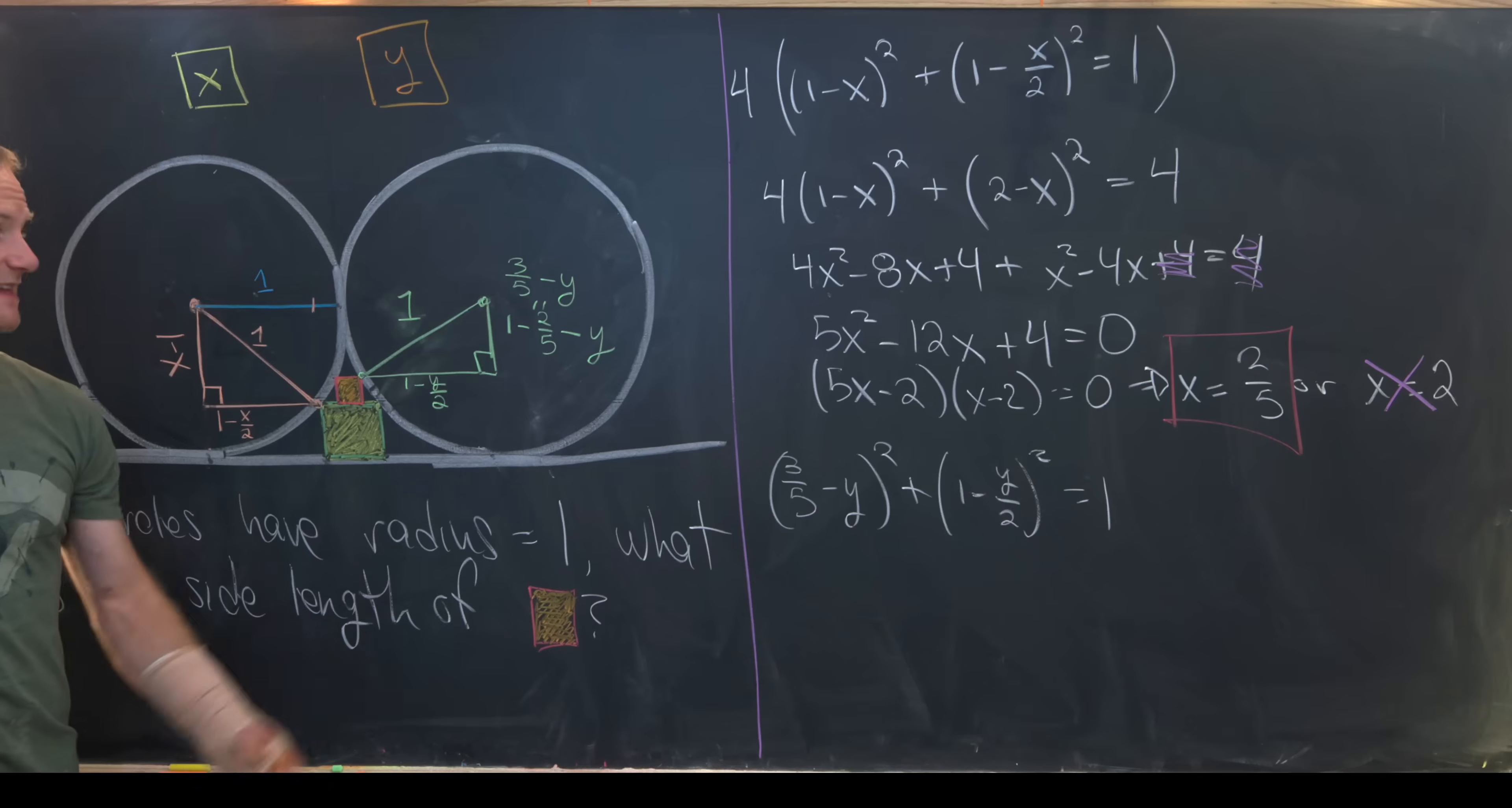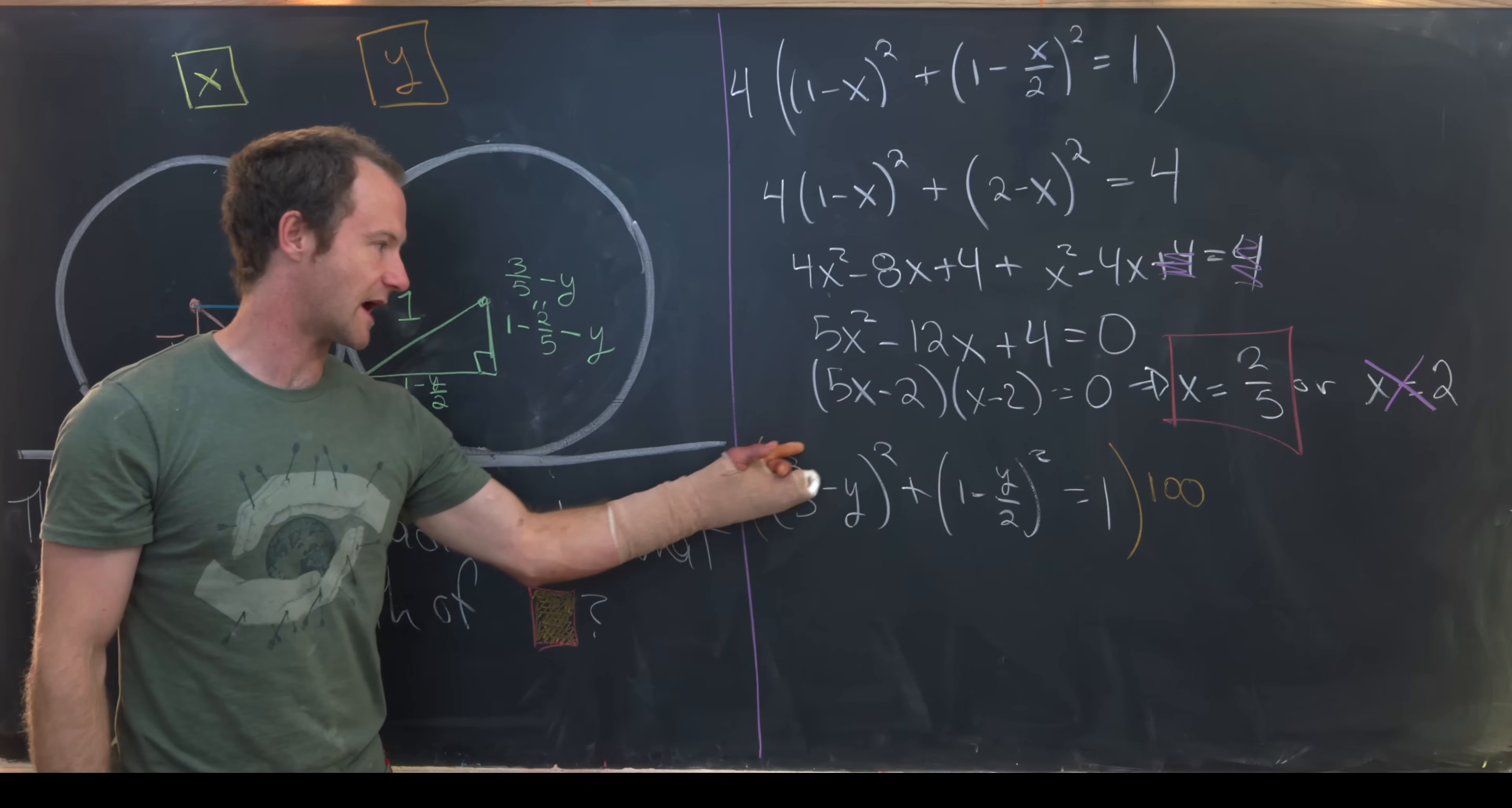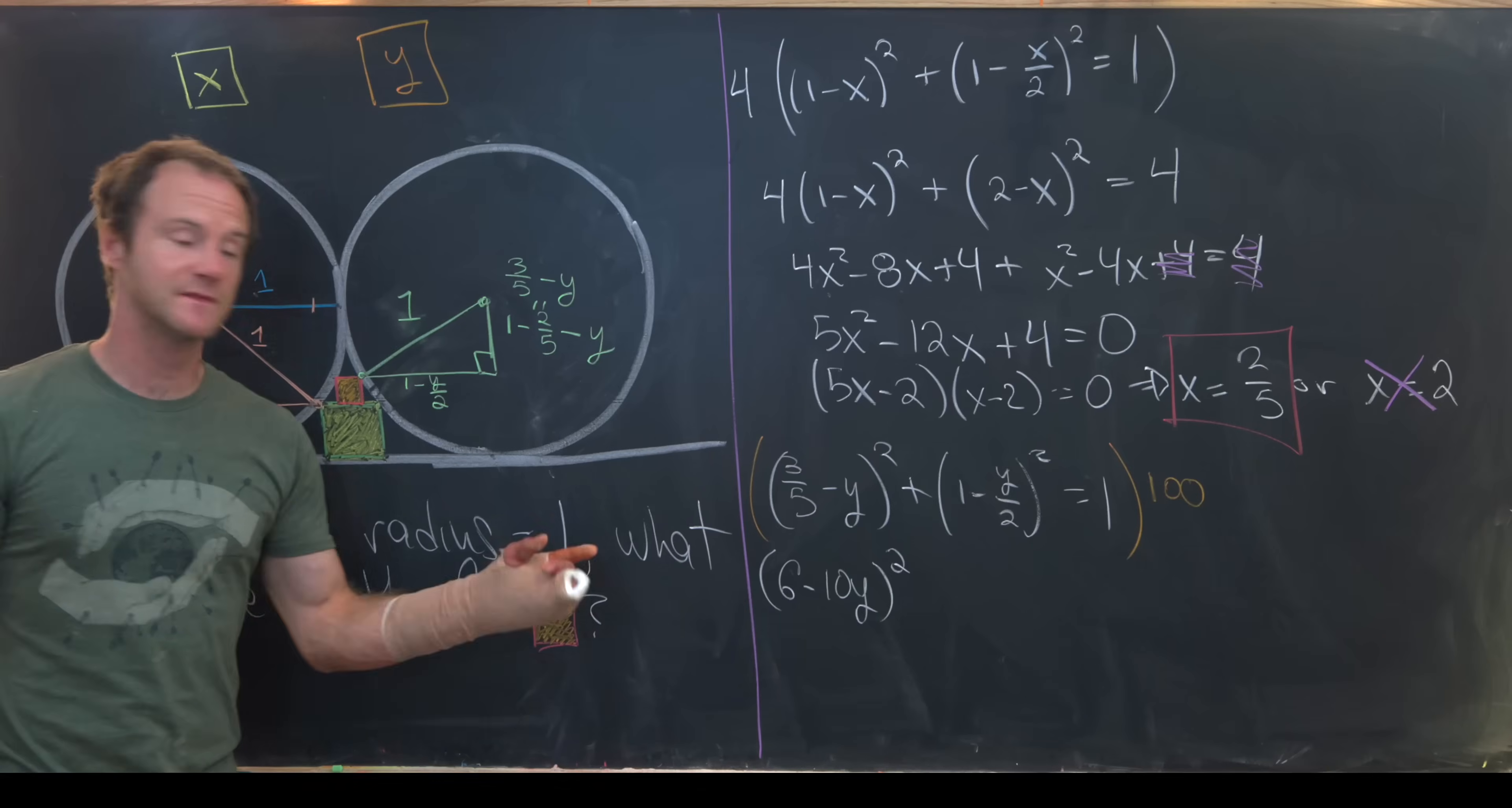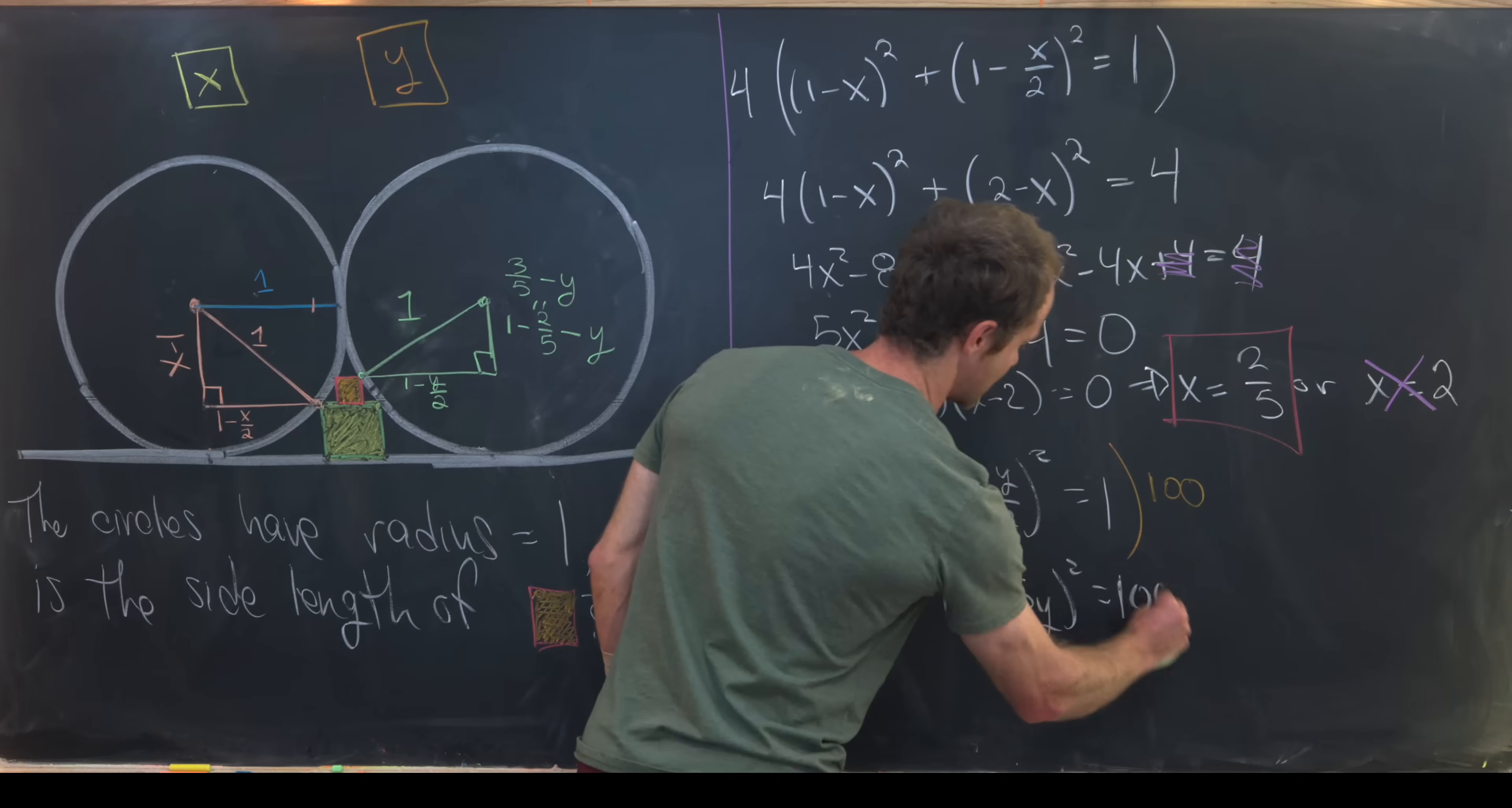Now we're going to play the same game that we did above. This time we're going to multiply both sides by 25 times 4 or 100. And that's so that we can clear the denominators. So we'll multiply this by 100. Bring it inside the square means we're really multiplying this by 10 and this by 10. That means here we have (6 - 10y)². Same thing goes here. Multiplying this by 100, if we bring it inside the square, it's like multiplying by 10. We have (10 - 5y)² equals 100.